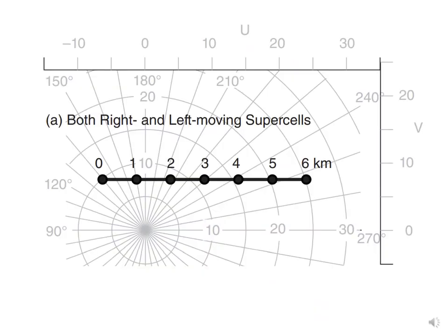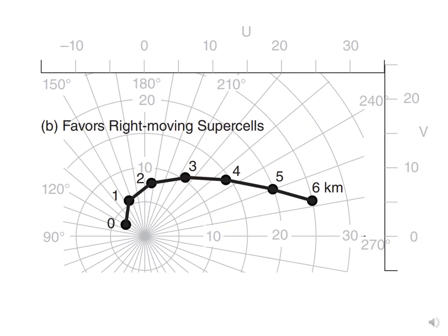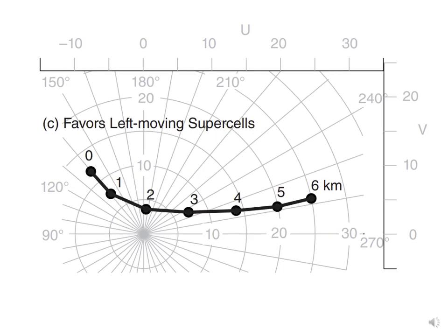A curved hodograph changing from easterly at the surface to westerly aloft — and getting stronger — is commonly associated with right-moving supercells. A different hodograph shape favors left-moving supercells. The wind shear environment plays a key role in determining the evolution of the supercell thunderstorm once it forms.